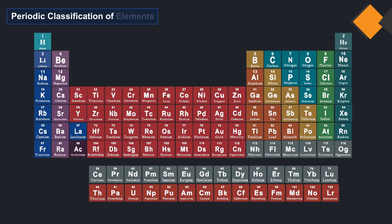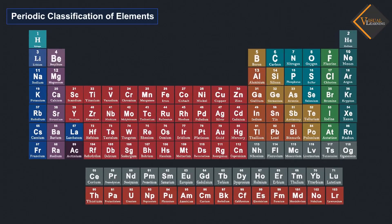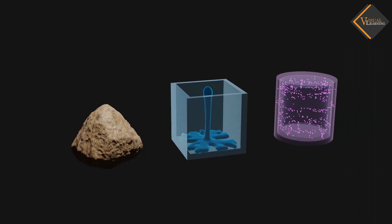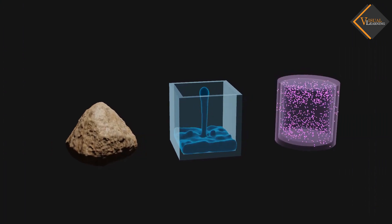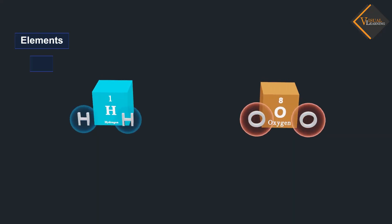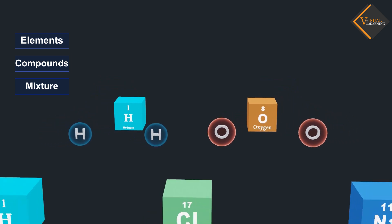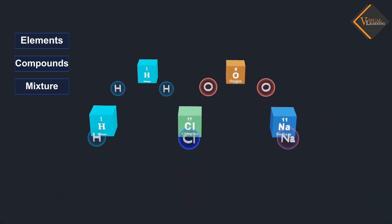Periodic classification of elements. We have learnt that matter around us is present in the form of elements, compounds and mixtures, and the elements contain atoms of only one type.